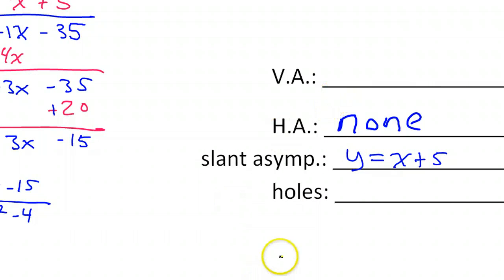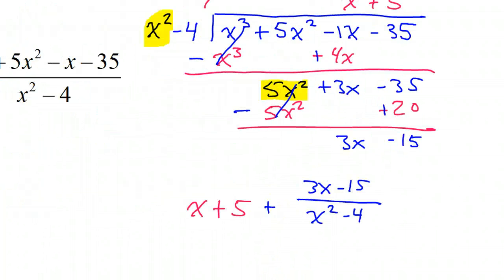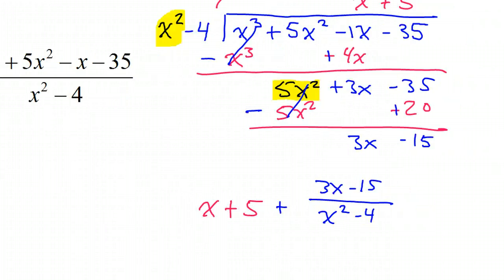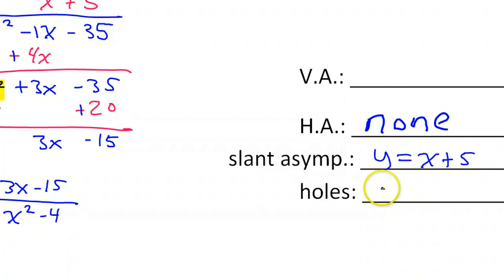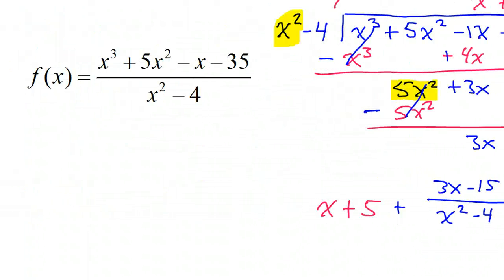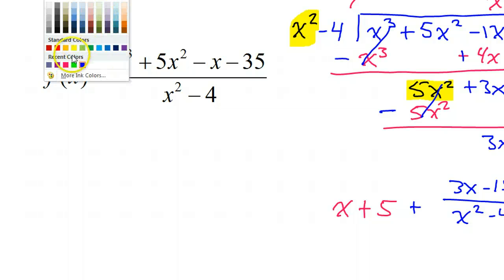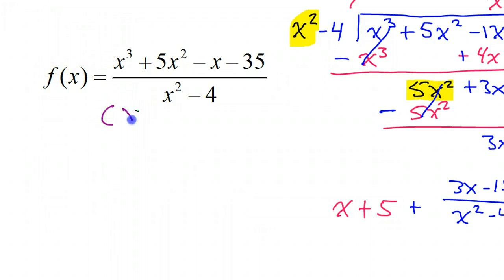Now, nothing canceled out. That means there are no holes. Holes happen when things cancel out. Normally, we see that by factoring the denominator. If I factor the denominator, that would make this x plus two times x minus two.